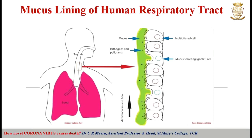All our airways and respiratory tract are lined by mucus, which keeps the respiratory tract moist and traps most invading pathogens. Beneath the mucus, fringe-like cilia cells line our respiratory tract. Cilia cells beat continuously and push mucus towards the airways, clearing out germs that try to invade the respiratory system. Usually, entrapped pathogens are coughed out along with mucus. This mucus and the cilia are the preferred attachment sites of coronavirus.